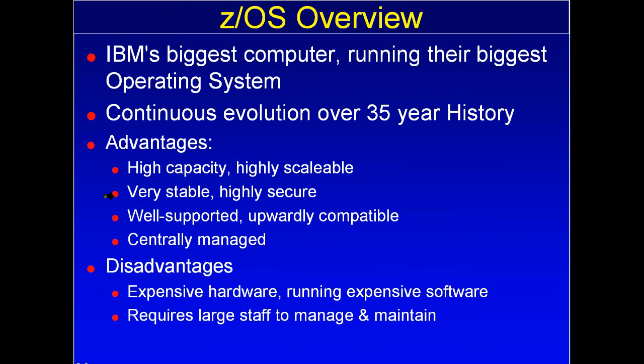The operating system we're running on is called ZOS, and it runs on IBM's biggest computer called a Z-Series. This has really been just a continuous evolution over a long time. The IBM 360, introduced in 1964, started a lot of things that are still part of this architecture. It's been expanded and modernized quite a bit, but a lot of things were done very well back then as far as architecture that are still active here.